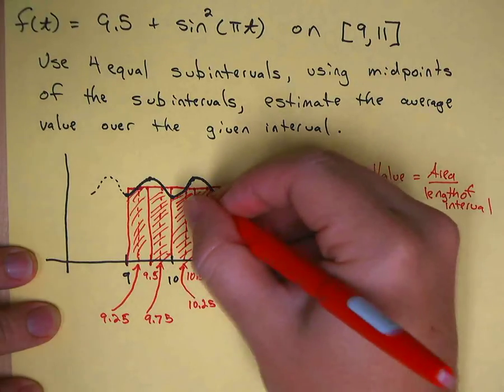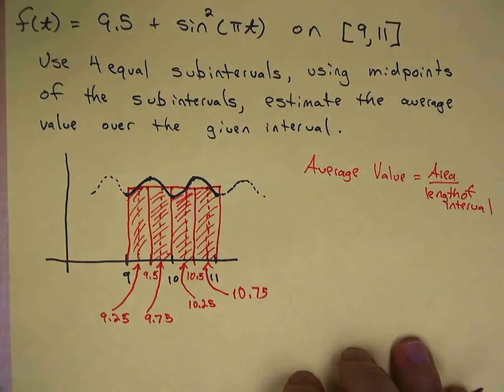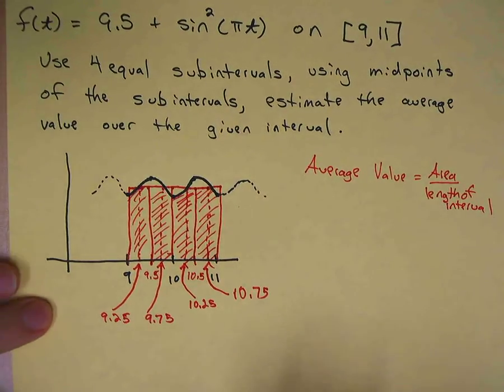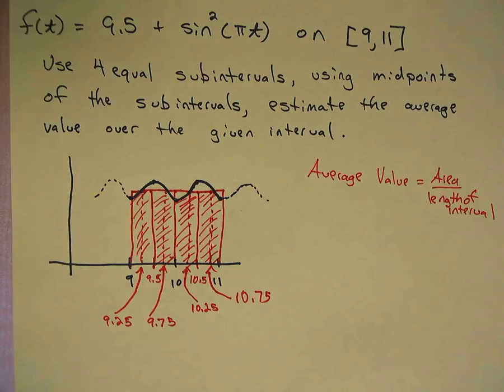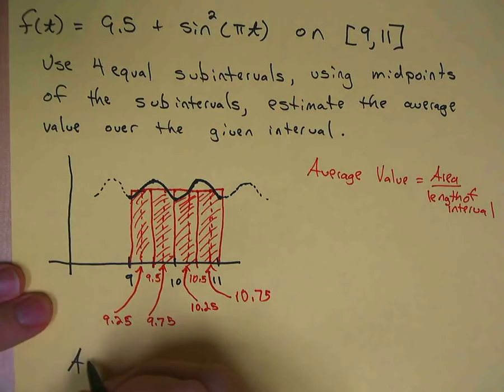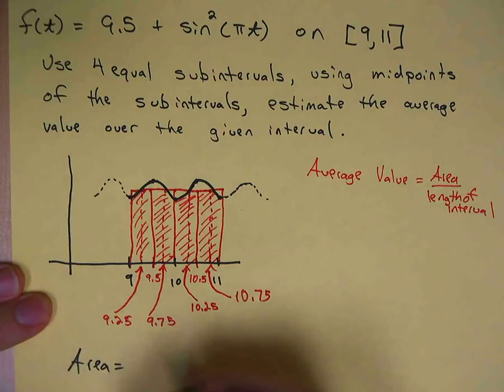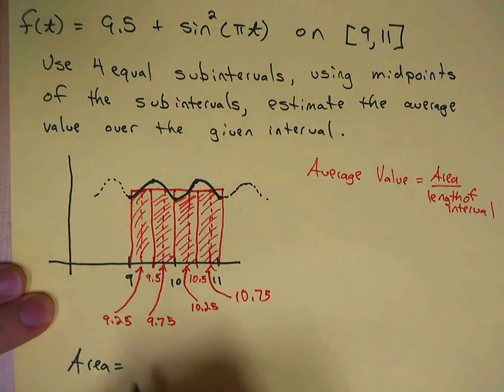We've got four rectangles there. To find the area of each one of those rectangles, we are going to do length times width. The length of each one of those is a half.